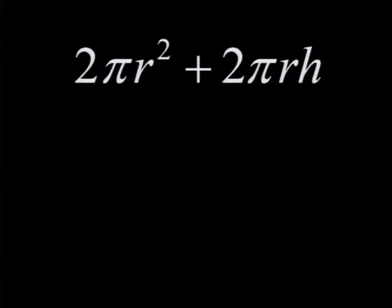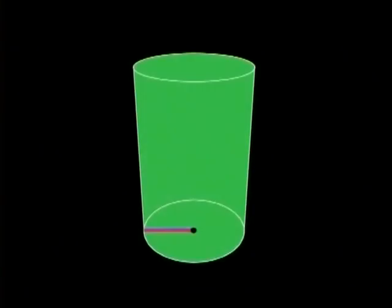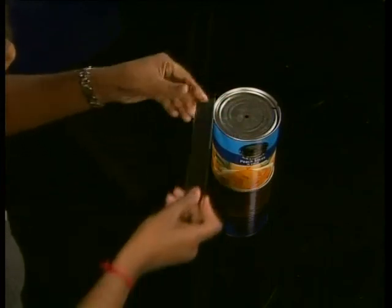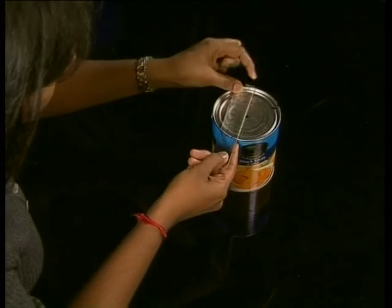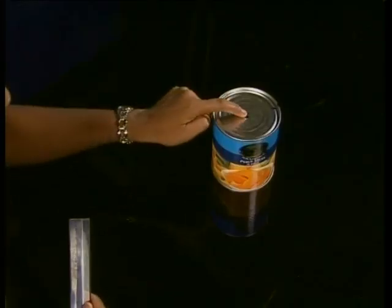We need to get the exact measurements of the can and then substitute these values into the formula we've just worked out. The formula for the cylinder is 2 times pi times radius squared plus 2 times pi times radius times the height. We already know that pi rounded off is 3.14, so all we need to do is find the radius and the height. Using a ruler I measure from one side of the can to the other side passing through the center — on my can I get 10 centimeters. The radius is half of the diameter, so the radius is therefore 5 centimeters.